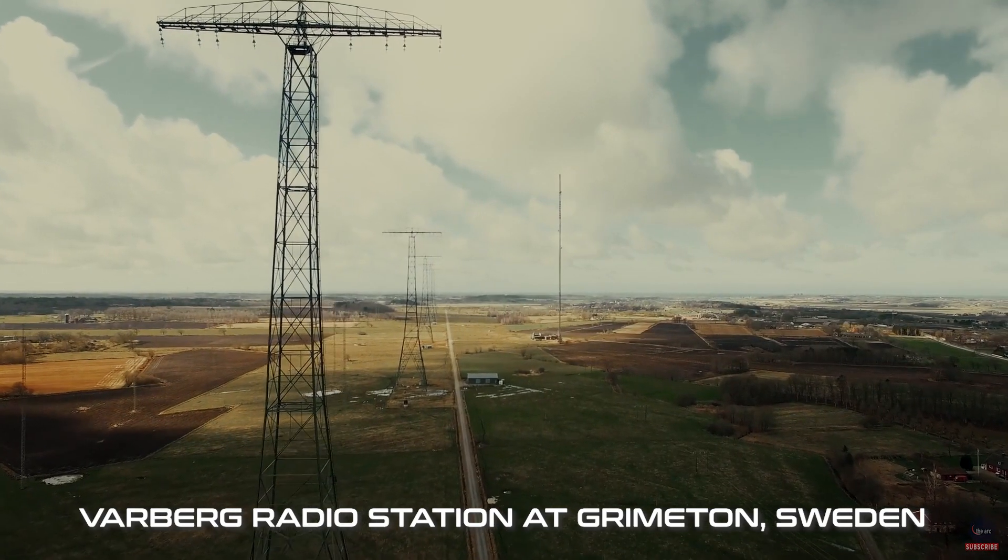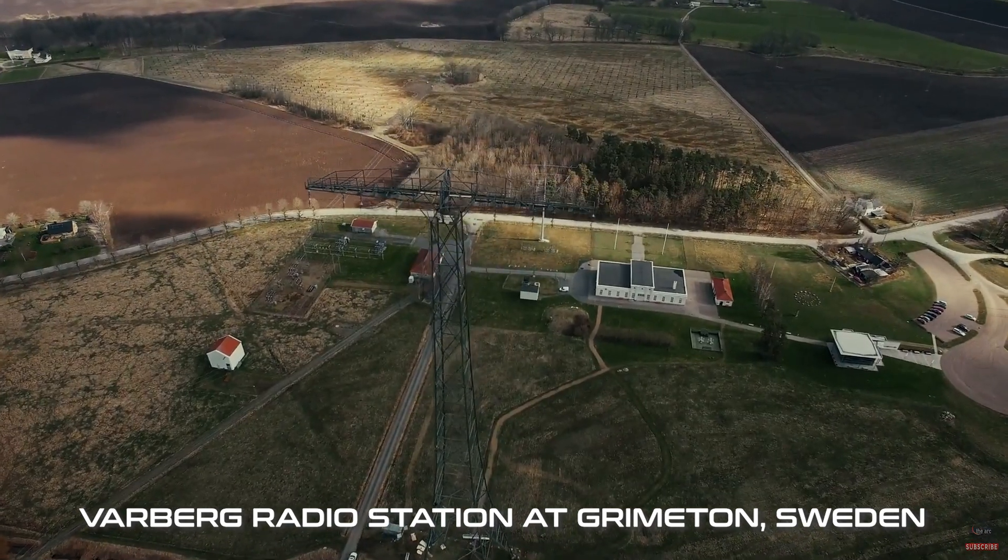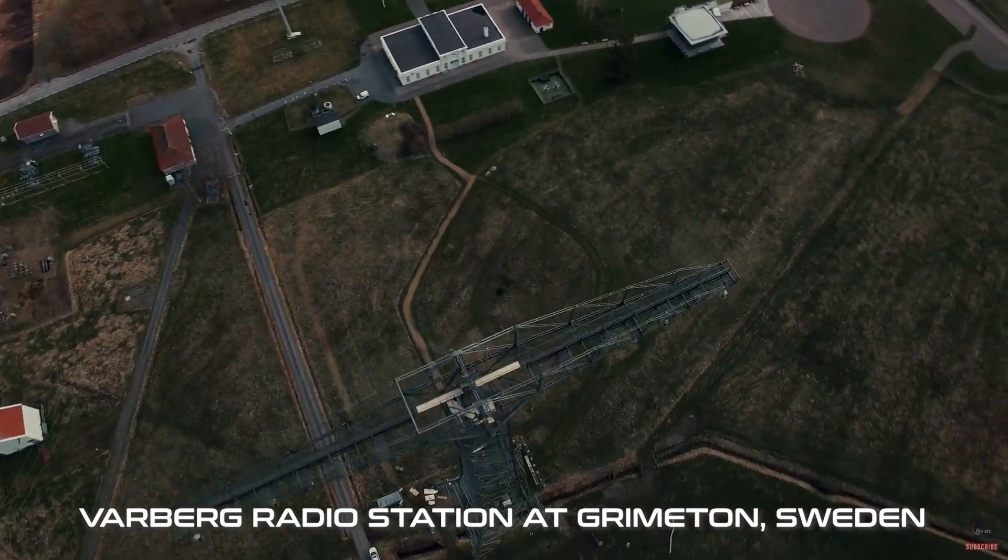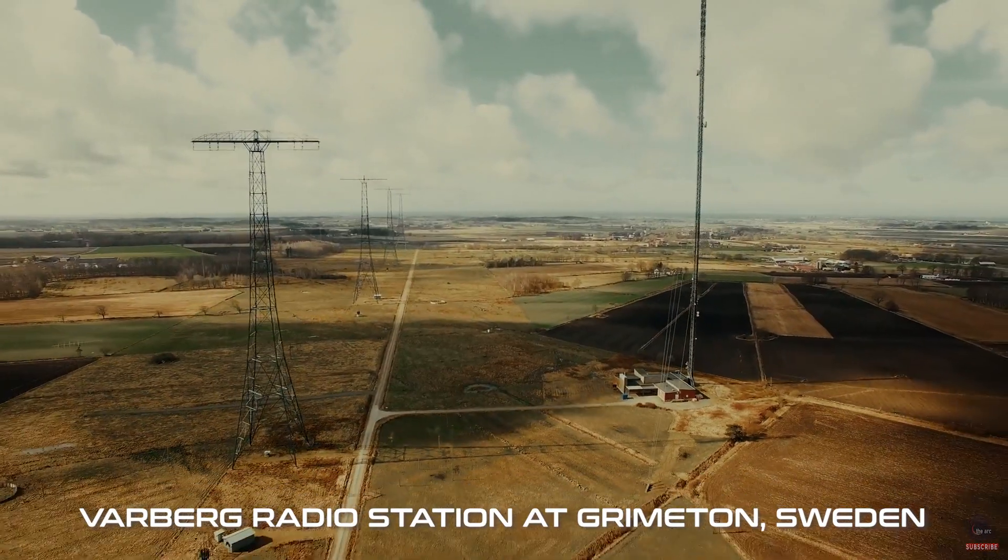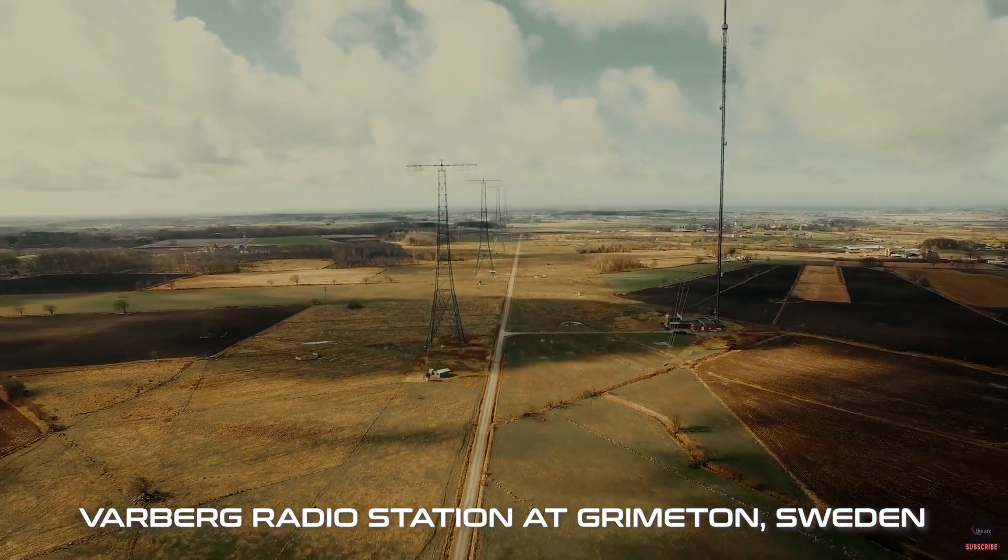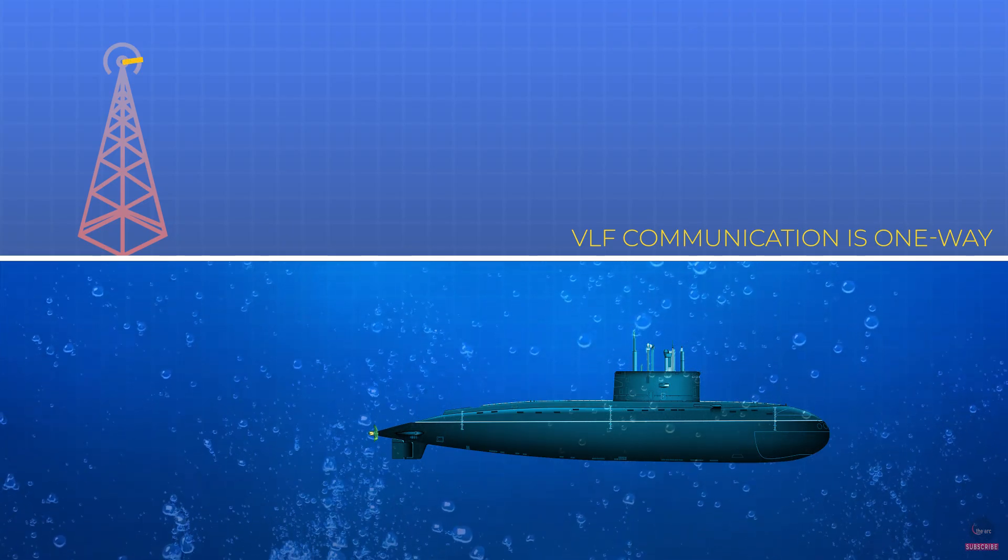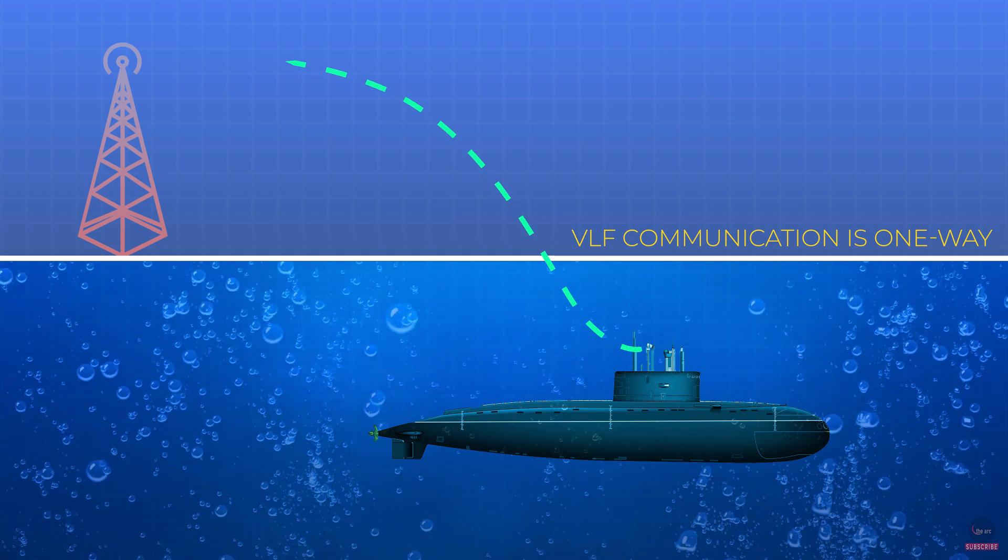But because of the very low frequency, the VLF antennas have to be quite large and powerful for long-range communication. And VLF stations therefore require large areas spanning square kilometers. This also restricts the submarines from transmitting VLF. But a relatively simple antenna is enough for receiving signals. Hence, VLF is always one way, from ground to the boat, not the other way around.